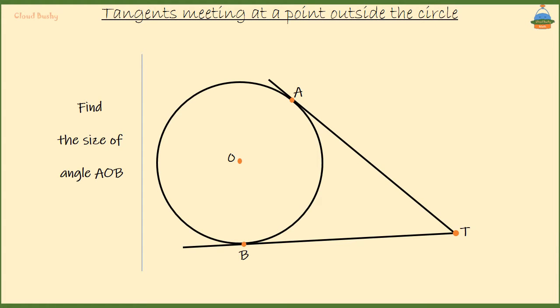Now, if we draw two radii from the point O at the center of the circle to points A and B, we know that the angle OBT is 90 degrees.